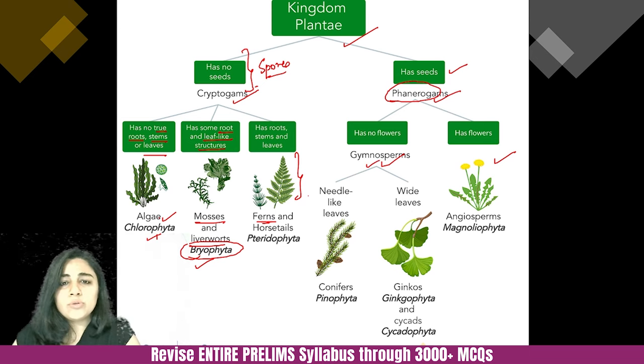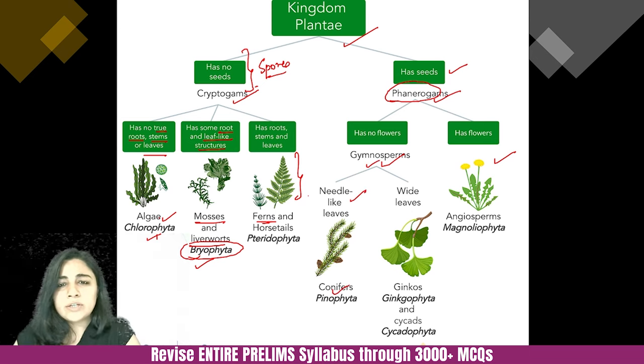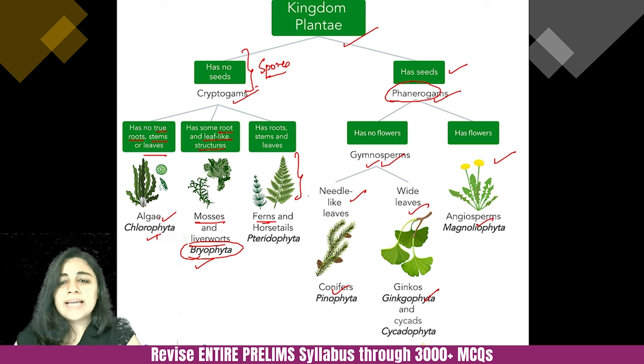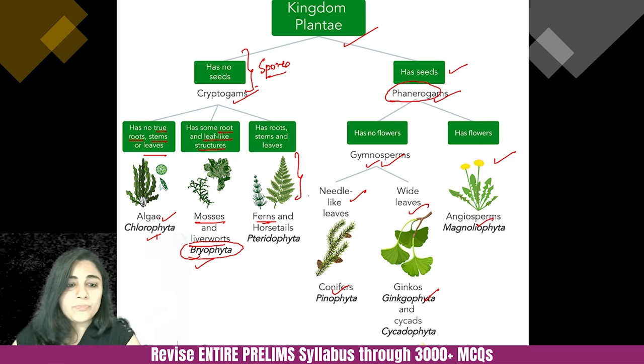Gymnosperms have needle-like leaves and conifers. There can be white leaves also. And angiosperms are the flowering variety. Now let's come back to the question from the beginning.